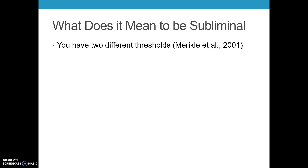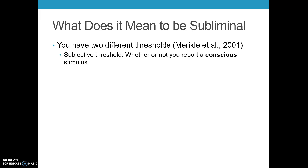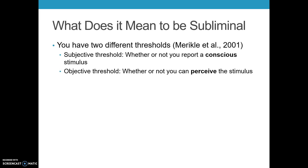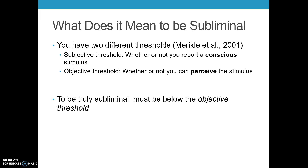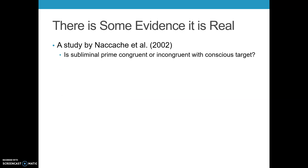So what does it actually mean to be a subliminal stimulus from the perspective of a cognitive psychologist? Miracle and colleagues back in 2001 reported that there are two different types of thresholds involved. You have your subjective threshold — whether or not you report a conscious stimulus — and you have an objective threshold — whether or not you can actually perceive it. There are instances where you perceive something and it influences your behavior, but you are not necessarily conscious of it. To truly be subliminal, something has to be presented below the objective threshold where you are not actually perceiving it.